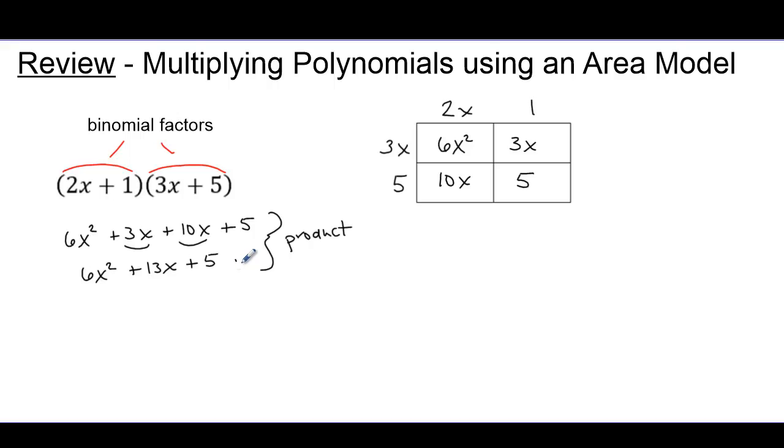And so these two expressions show my product. And you can see that when we combine terms, we get a quadratic trinomial. Notice also that the area model makes it nice because when we add our terms for our product, it's very easy to see the like terms.